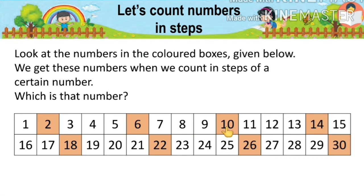We have to jump to fourteen — it means we count one, two, three, four steps, and we get fourteen. The next number is eighteen. Again we count one, two, three, and four — we get eighteen. Next we have to jump to twenty-two. We count one, two, three, and four — after counting four steps we get twenty-two.